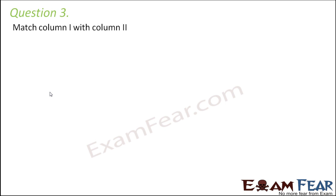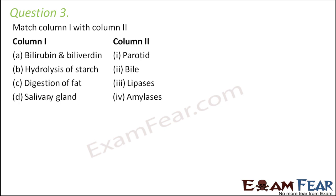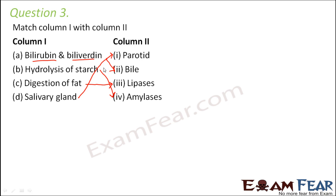Question number three: match column one with column two. Bilirubin and biliverdin are the bile pigments — the yellow color pigments — so A matches with two. Hydrolysis of starch is the conversion of starch into disaccharides or monosaccharides, and amylases are the enzymes for this. Digestion of fat is carried out by lipase. The parotid is an example of a salivary gland; there are three pairs of salivary glands: parotid, maxillary and submandibular, and sublingual.